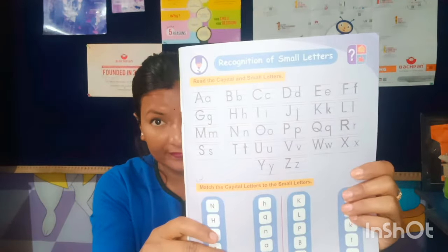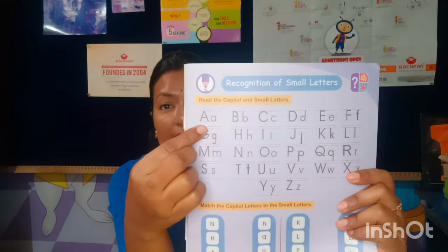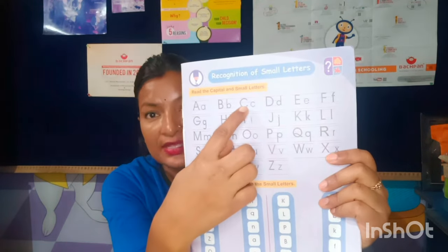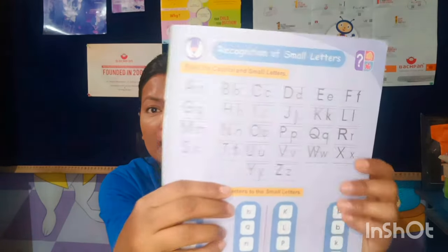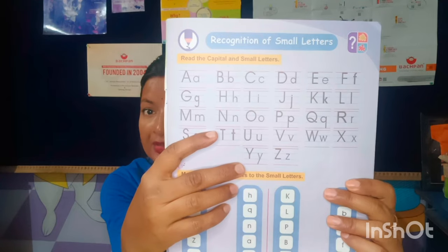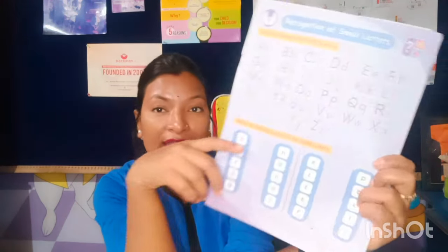You can see all the alphabets in both capital and small form: capital A, small a; capital B, small b; capital C, small c; capital D, small d; capital E, small e; capital F, small f — like that all the way to Z. Now the next exercise is to match the capital letters to the small letters.